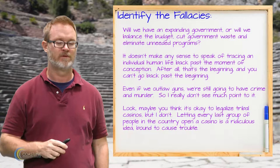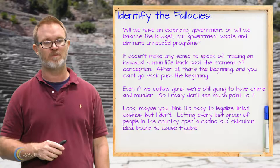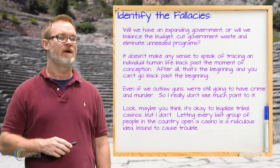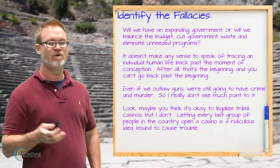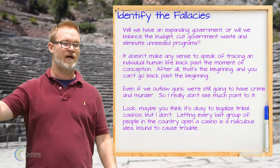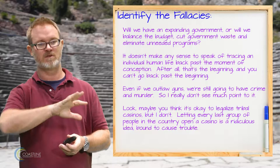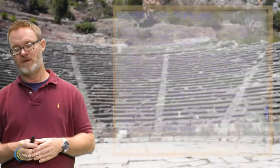The last example: maybe you think it's okay to legalize travel casinos, but I don't — letting every last group of people in the country open a casino is a ridiculous idea bound to cause trouble. Here you go from the position of legalizing travel casinos to letting every last group of people in the country open a casino. This is again what we call a straw man — misconstruing the position to make it seem absurd.